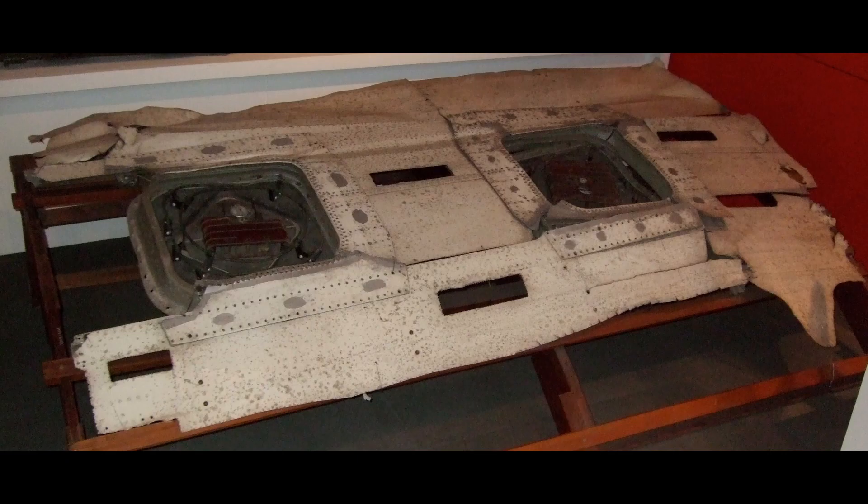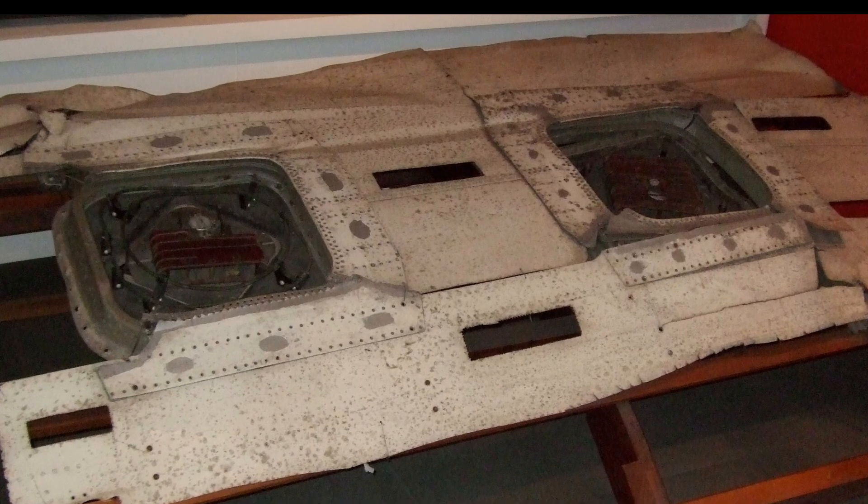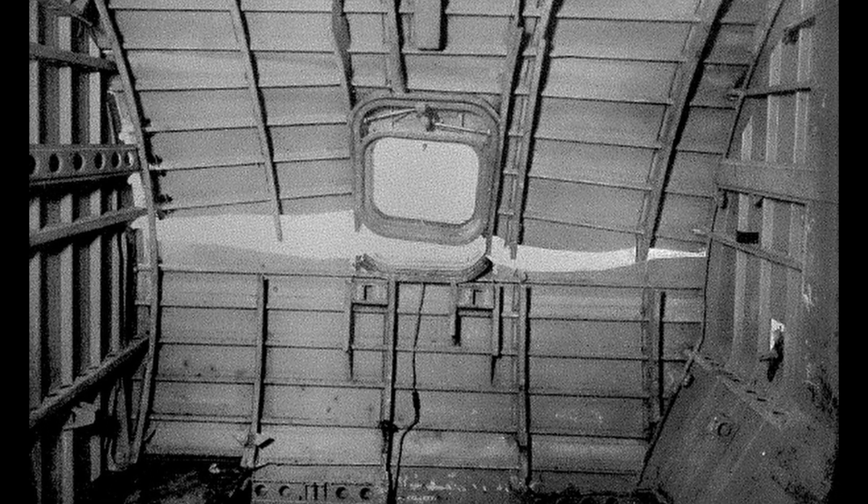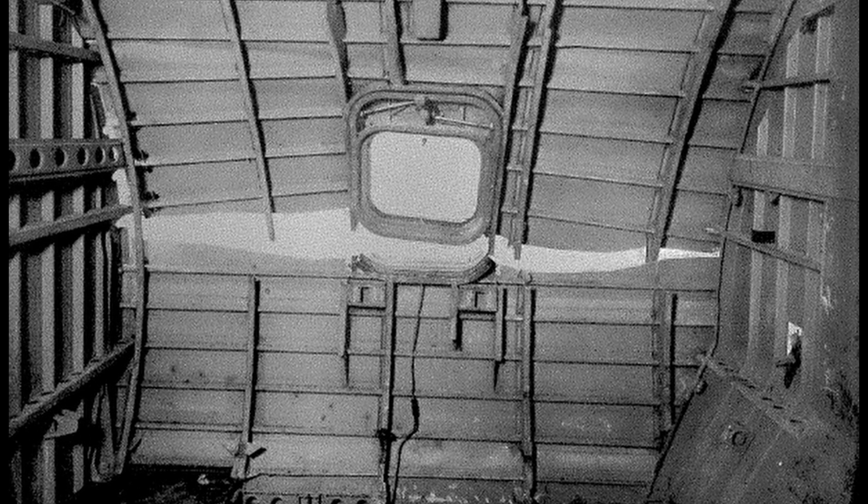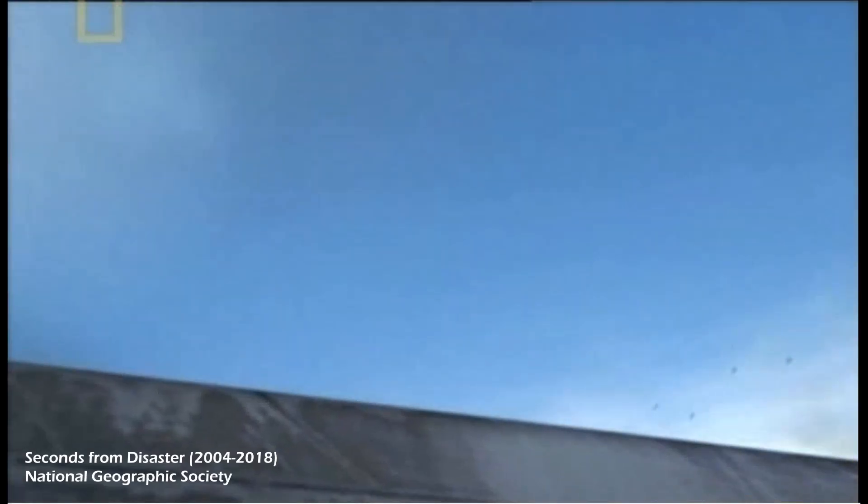The investigations revealed that there was a major flaw in the design of the Comet. The corners of the square windows had high stress concentrations. The constant cycle between pressurized and depressurized states put enormous strain on the airplane's fuselage, gradually weakening it, causing metal fatigue. The metal fatigue at the stress concentrations around the window corners led to the rupture of the fuselage, causing the airplane to disintegrate mid-air.